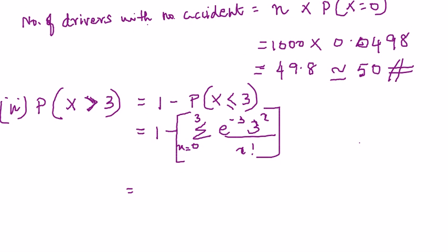Since e power minus 3 is common, I am going to take e power minus 3 outside, it is going to be 3 power 0 by 0 factorial. Basically, I am substituting the values 0 to 3 here for x.